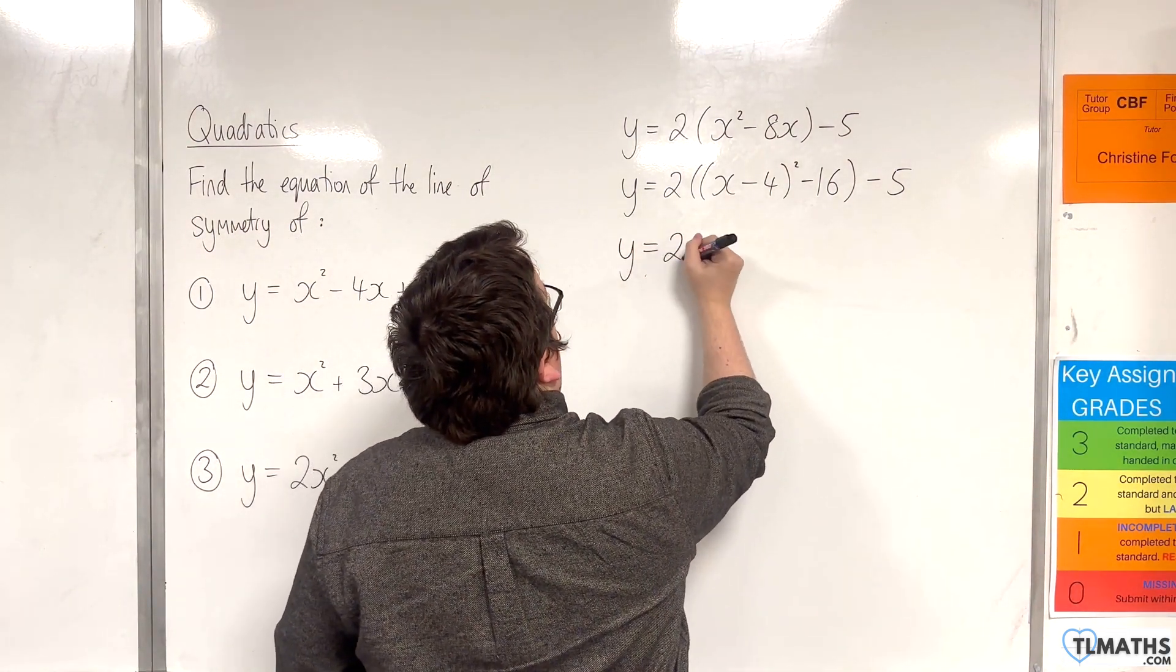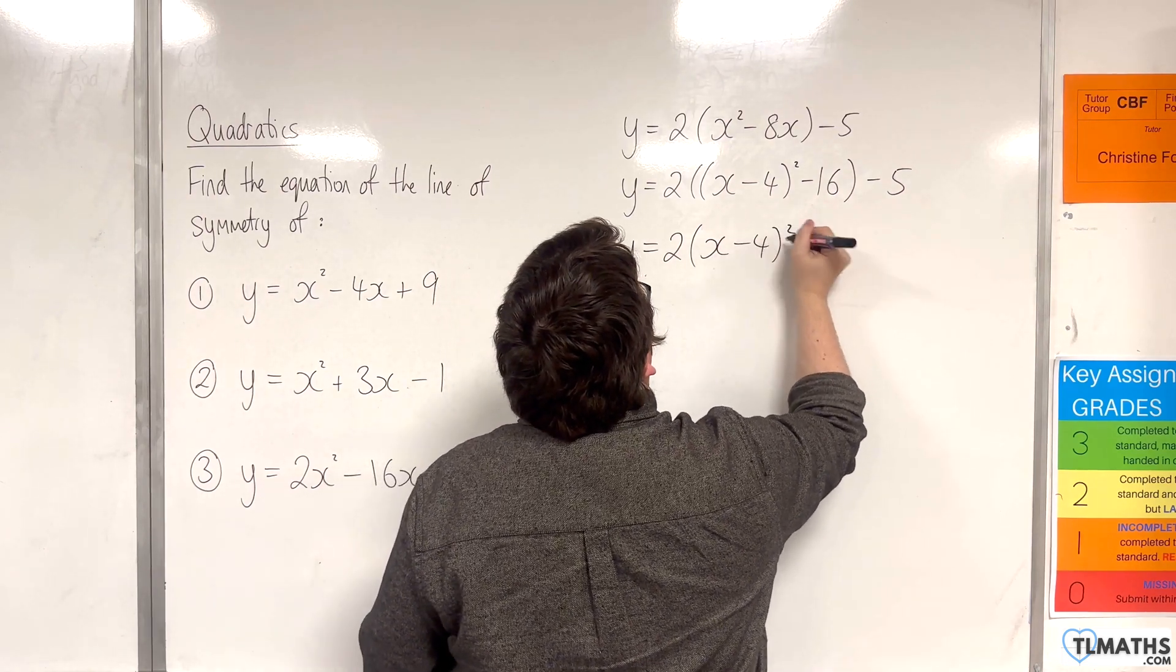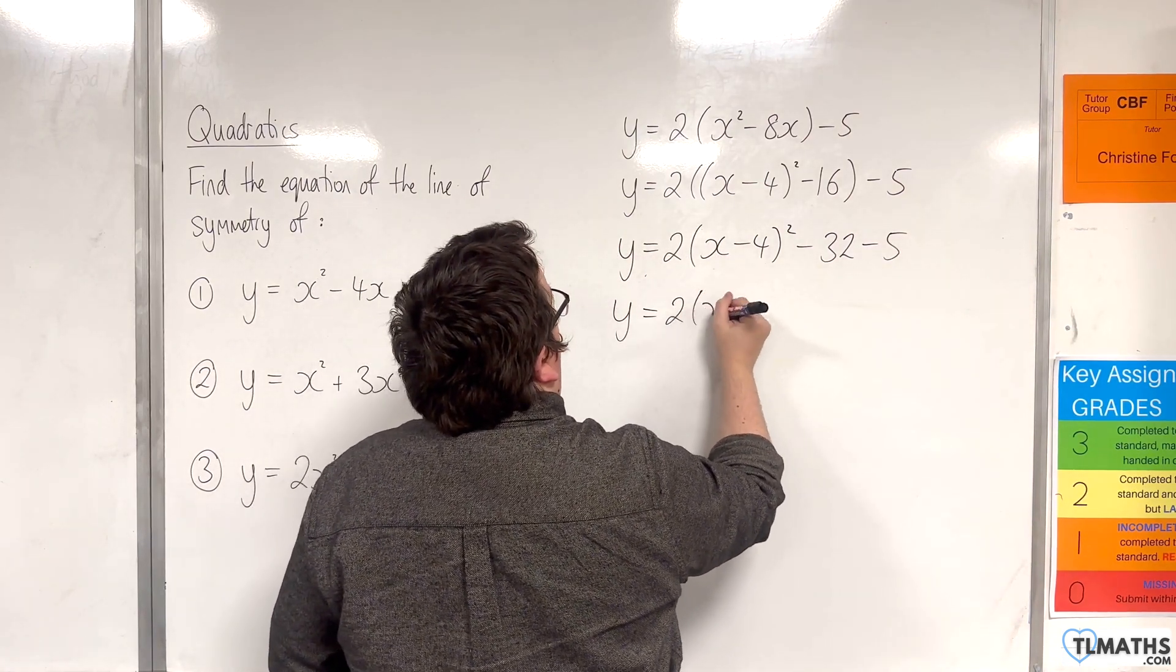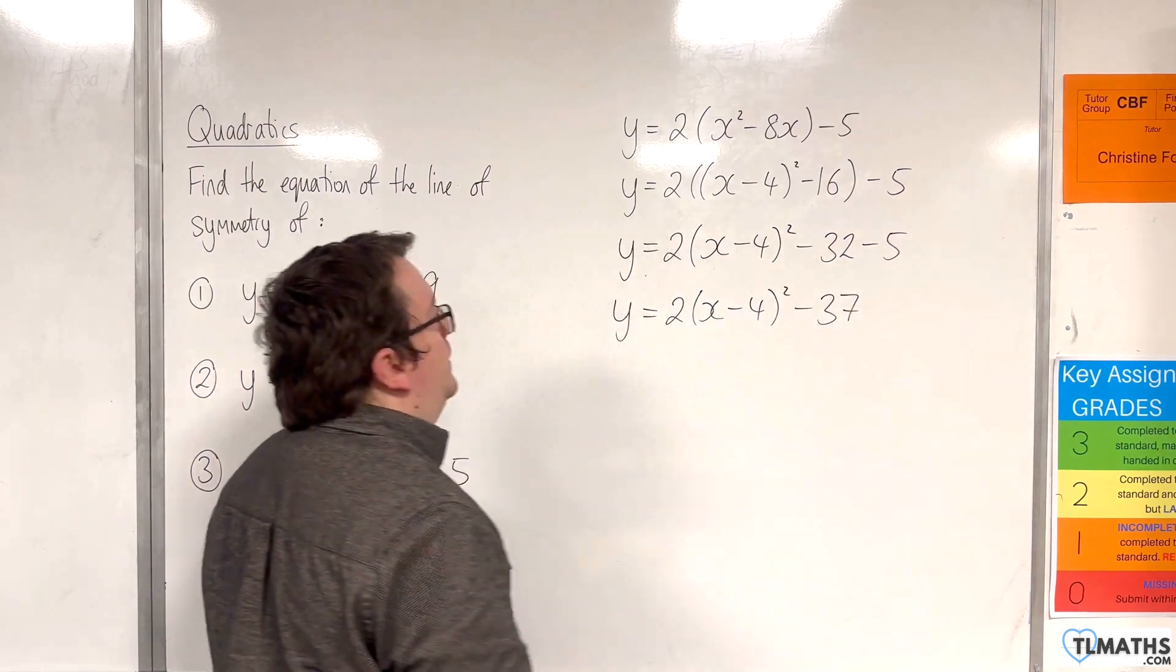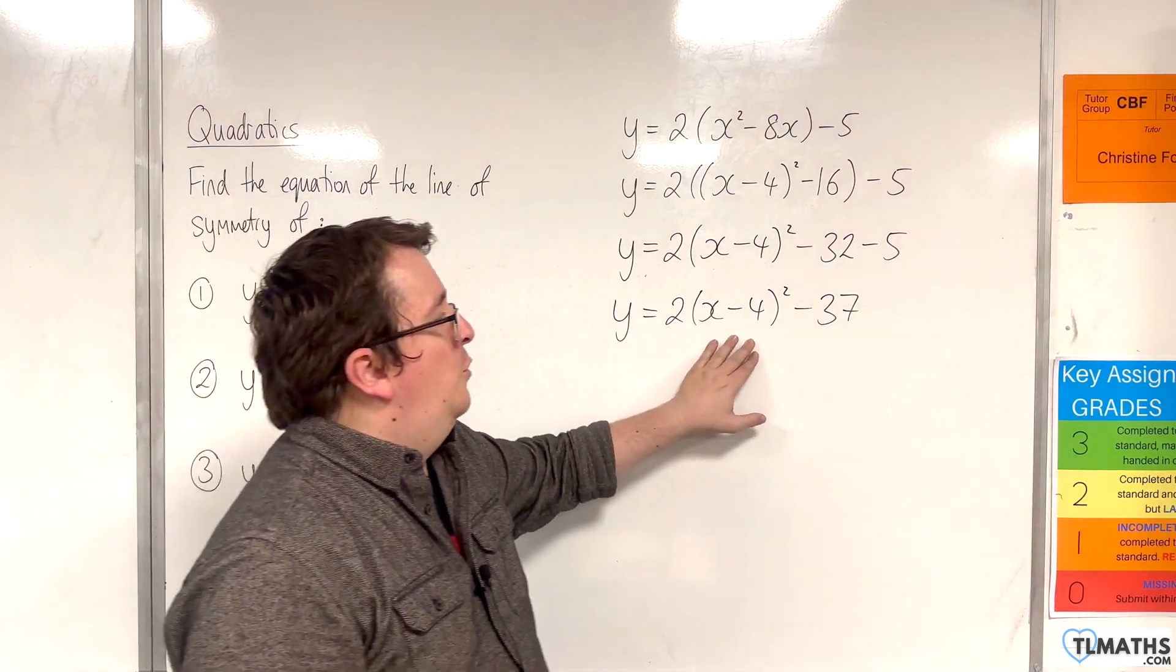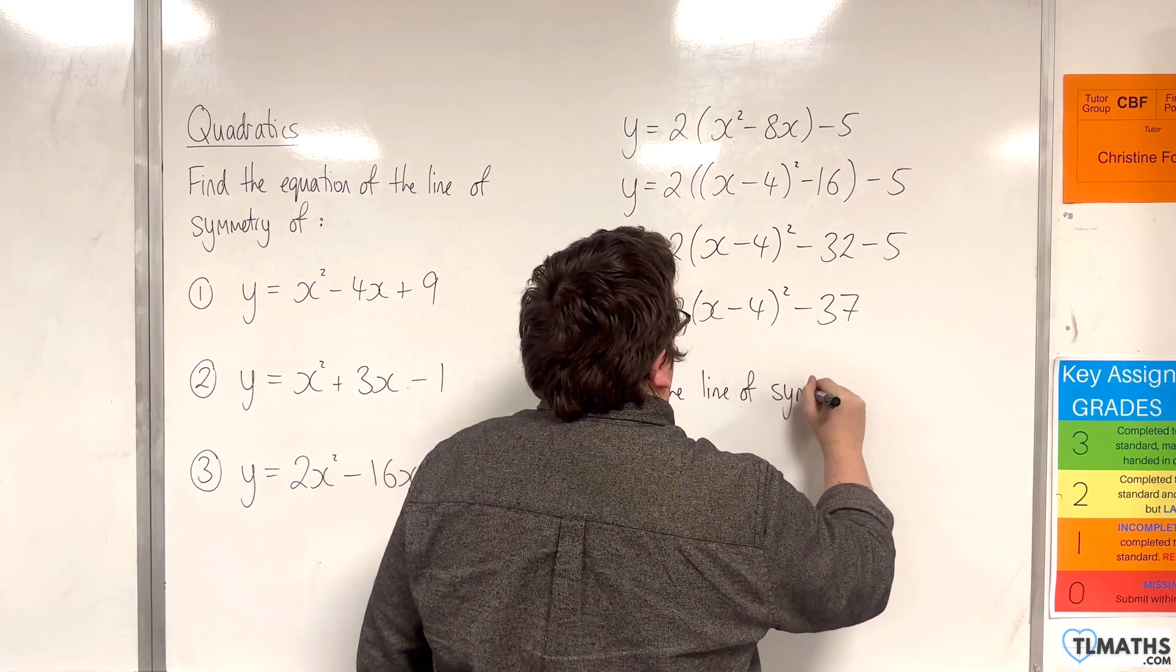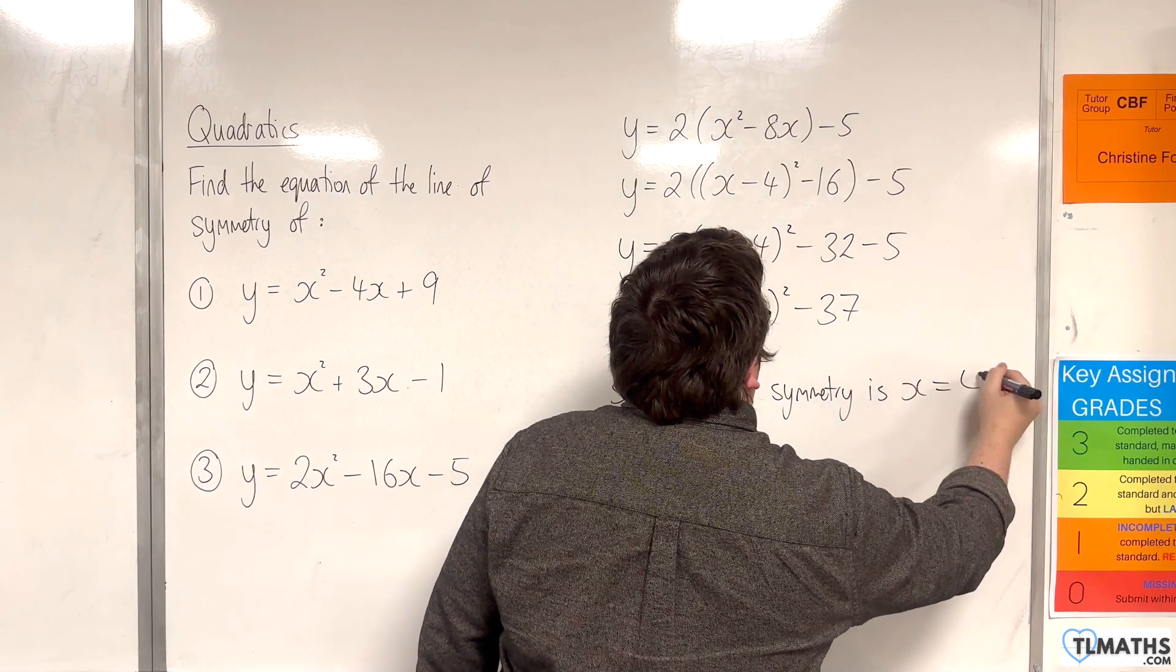So y is going to be 2 lots of, multiplying out the bracket now, x take away 4 squared. 2 lots of minus 16 is minus 32, take away 5 on the end. So y equals 2, x minus 4 squared, minus 37. So this parabola has a vertex at 4, minus 37. So the line of symmetry is x equals 4.